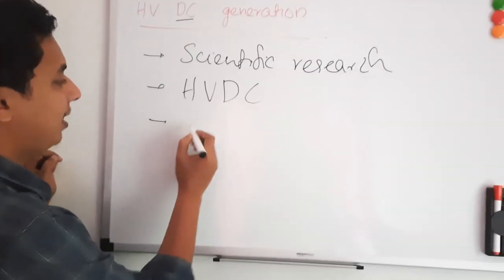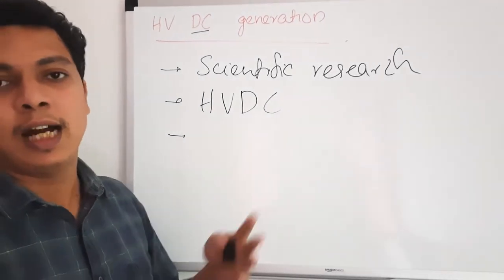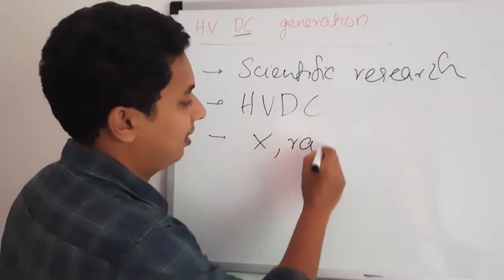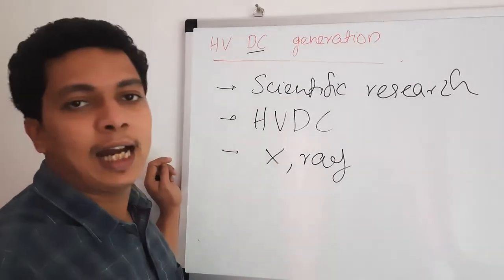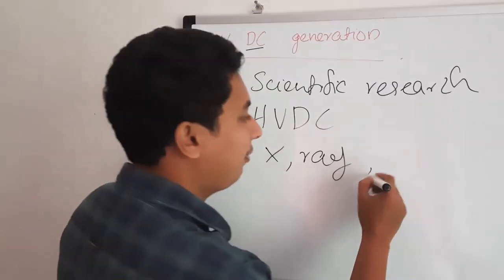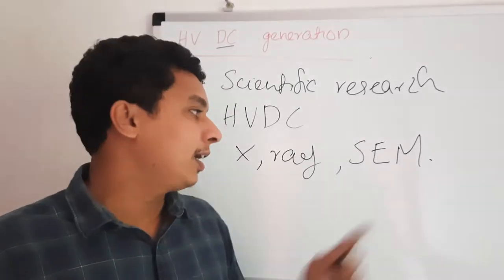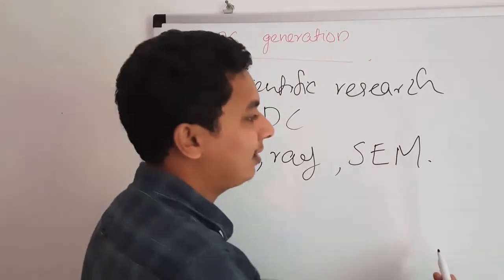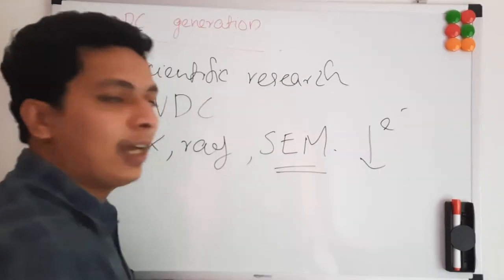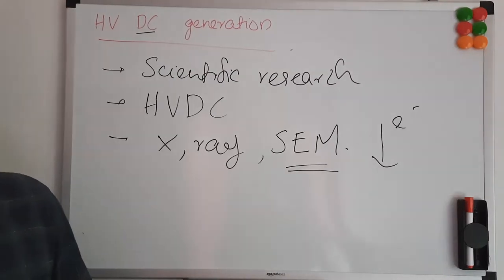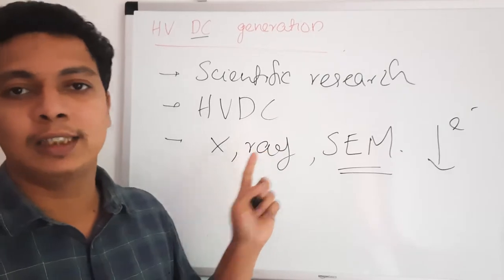Taking other examples, in some biomedical equipment we use high voltage DC. One such example is X-ray — in order to make an X-ray, you need a high voltage DC supply. Similarly, in scanning electron microscopy or other such equipment, in order to generate high velocity electrons, you need a high voltage DC supply. These are some of the applications that require high voltage DC.